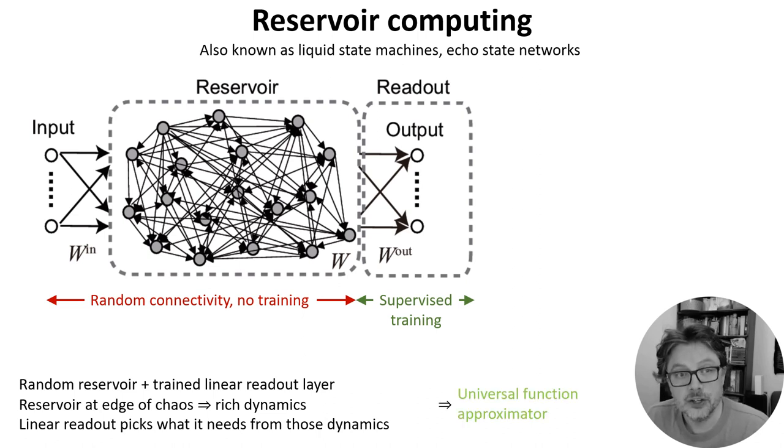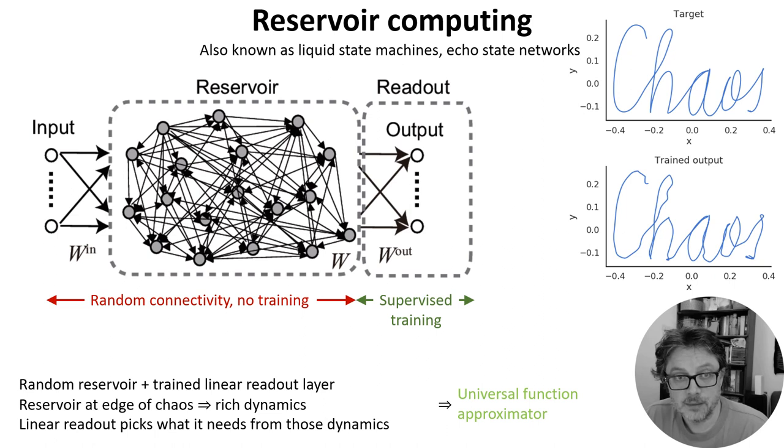And this works. You can prove that this setup allows you to approximate any time varying function with enough neurons. Here's an example of a target trajectory and a reconstruction using reservoir computing.